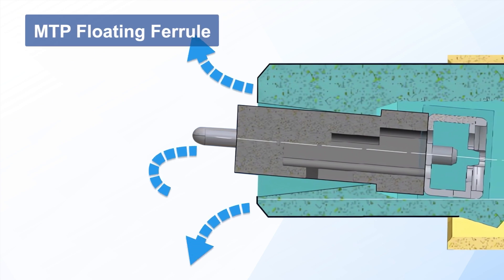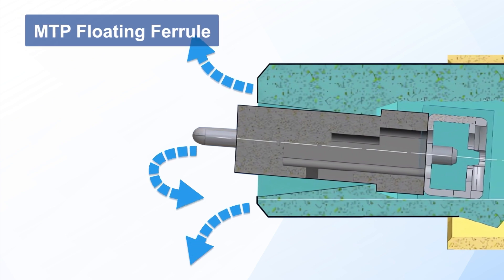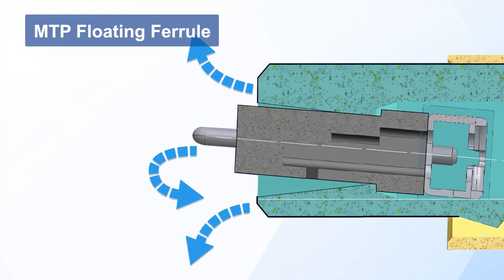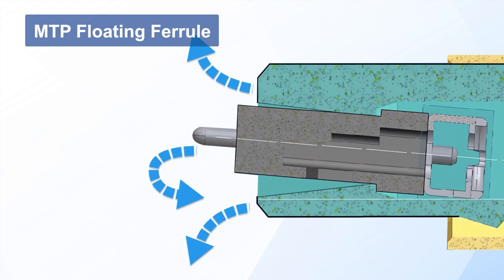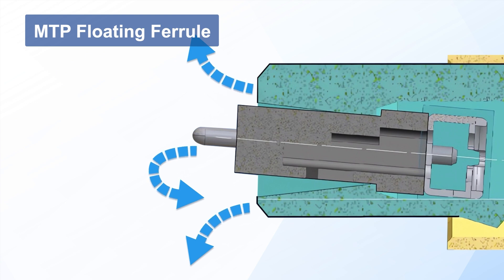MTP also uses unique floating ferrule technology. This allows slight movement of the MT ferrule within the outer housing, significantly improving mechanical performance. When connectors mate, even under external force or minor misalignment, the floating ferrule automatically adjusts to maintain end-face contact.